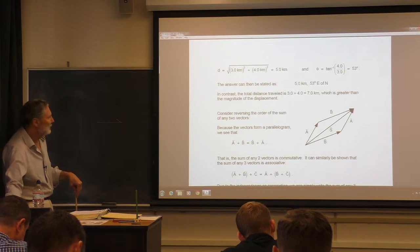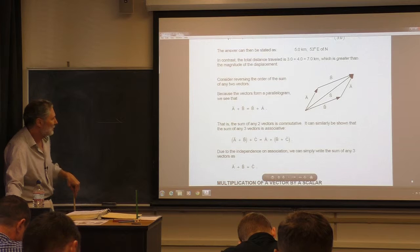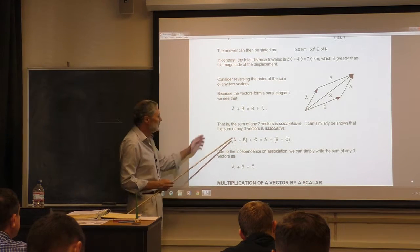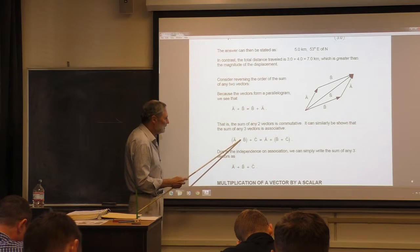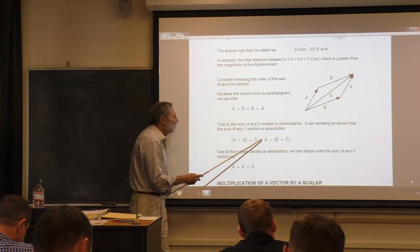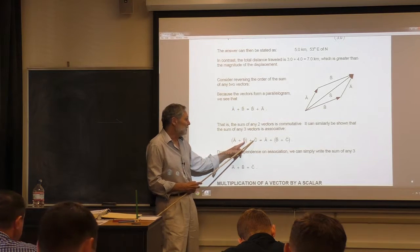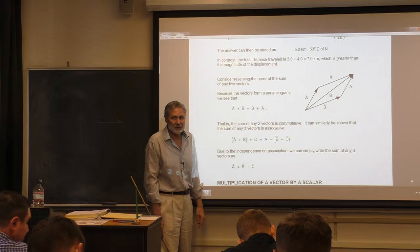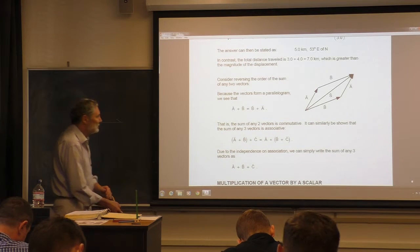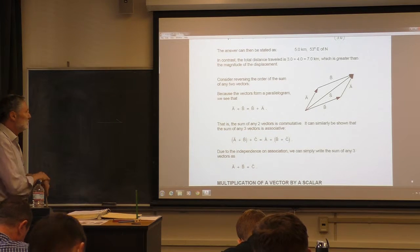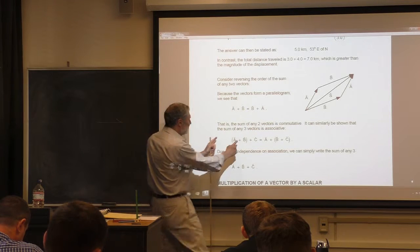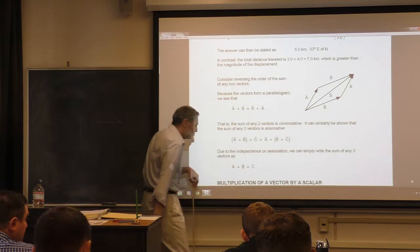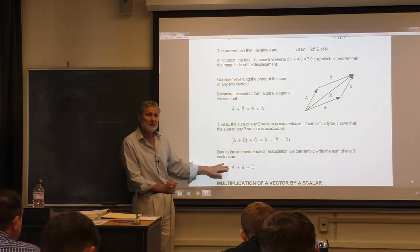If I want to add three vectors, I can add the first two together and then add the result to the third. Or I can add the last two together first and then add that to the first. You get the same answer either way — this is called the associative property. The result is independent of how we associate the grouping, so you don't have to put parentheses in.